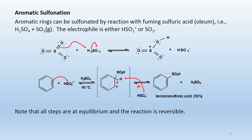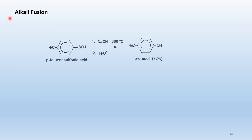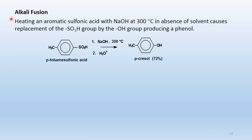All steps are at equilibrium. Sulfonation (forward reaction) is favored by strong acid; desulfonation (reverse) is favored in hot dilute aqueous acid. After sulfonation, alkali fusion is often performed: heating an aromatic sulfonic acid with NaOH at 300°C in the absence of solvent replaces the sulfonic acid group with a hydroxyl group, producing a phenol. For example, para-toluene sulfonic acid with NaOH at 300°C followed by H3O⁺ produces para-cresol.